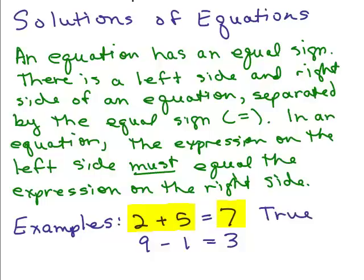Now let's look at the next one: 9 minus 1 equals 3. Well, 9 minus 1 is 8, so it's not equal to 3 — this is a false equation. Instead of writing that it's false, you could just slash through the equal sign, which says 9 minus 1 is not equal to 3.